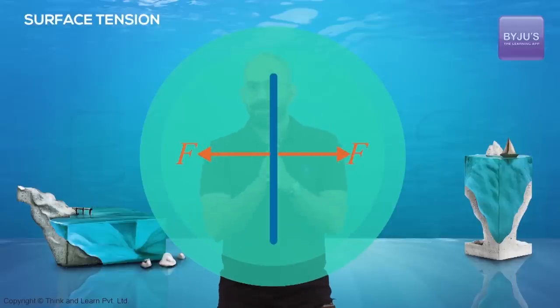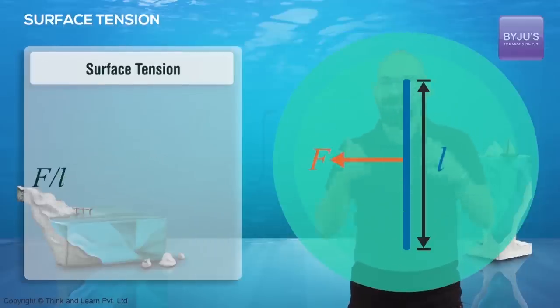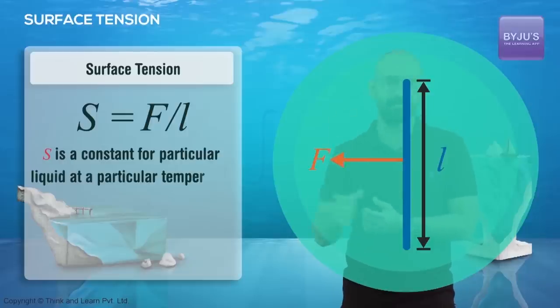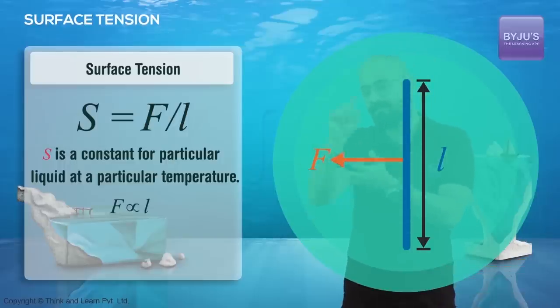So what we find is that if we take one of these forces, let us say this force F and divide it by this length L, it is constant for a particular fluid. Let us say that constant we call it S. So F by L equals S and this constant is constant for a particular fluid at a particular temperature. Now another way of saying is that this force is directly proportional to this length. And if I replace that proportionality with the constant of proportionality, I will get F is equal to S into L.